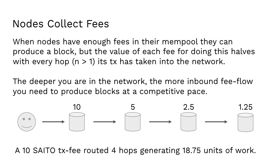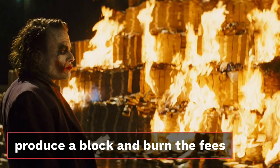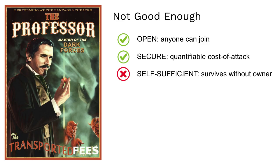The value used to measure fees is not the actual fee being paid into the network — it's the value of the fee halved with every hop that the transaction has taken to reach your mempool. So the deeper you are in the network, the more honest fee flow you need to produce blocks at a competitive pace. Eventually someone is able to produce a block, and then we burn all of the fees — nobody gets paid. This is good, but it's not good enough: the network is open and secure, but it's not self-sufficient because it can't survive without an owner running the infrastructure.